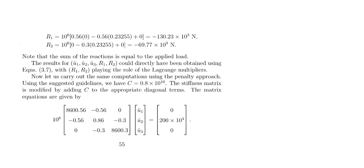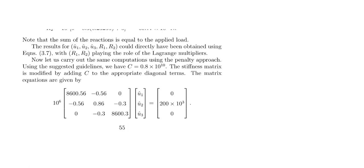Now we discuss how to solve using the penalty approach. We take a C value. Using the penalty approach guidelines, C = 0.8 × 10¹⁰. How do we find C? C is defined as the maximum value of k_ij in the global stiffness matrix, multiplied by 10⁴.